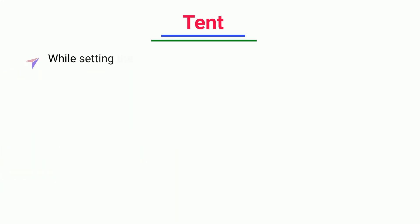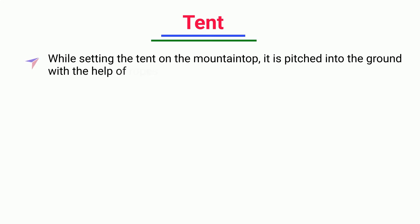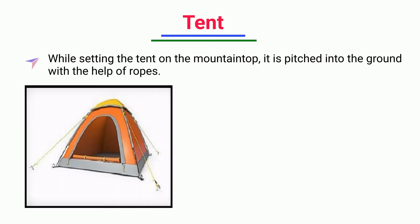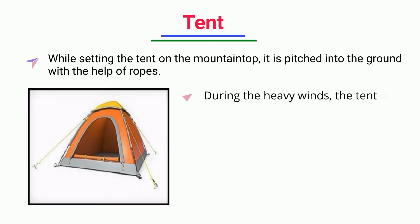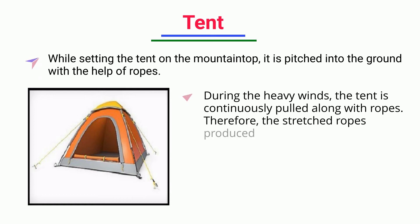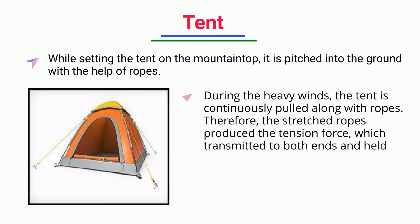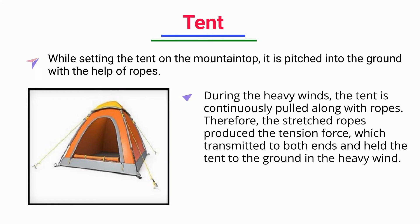Tent. While setting the tent on a mountaintop, it is pitched into the ground with the help of ropes. During heavy winds, the tent is continuously pulled along with the ropes. Therefore, the stretched ropes produce tension force which is transmitted to both ends and holds the tent to the ground in heavy wind.